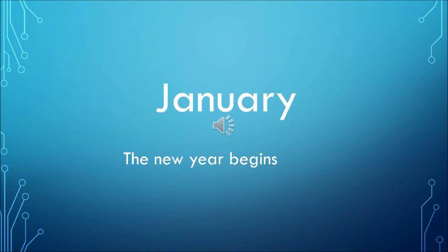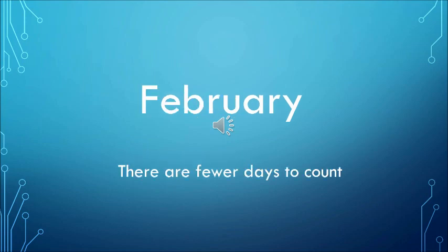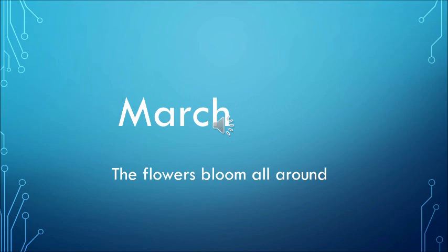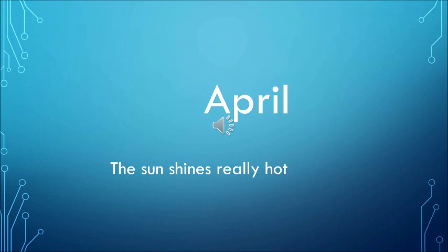Now we'll be singing another rhyme about what happens in each month of the year. January — the new year begins. February — there are fewer days to count. March — the flowers bloom all around.